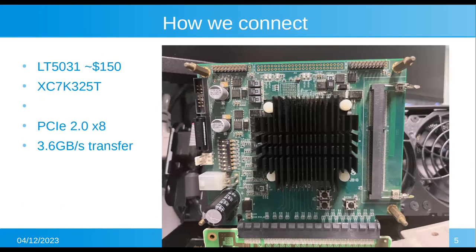To connect something to PCI Express, I use this one — the LT5031, which is available on Chinese Taobao, and you can email me if you want one. This is the lowest-cost high-end FPGA I think — the 7K series FPGA chip is listed at around five thousand US dollars on distribution, but when you buy it in large quantities, you can get it for something like one hundred dollars — that's a 50-times difference.